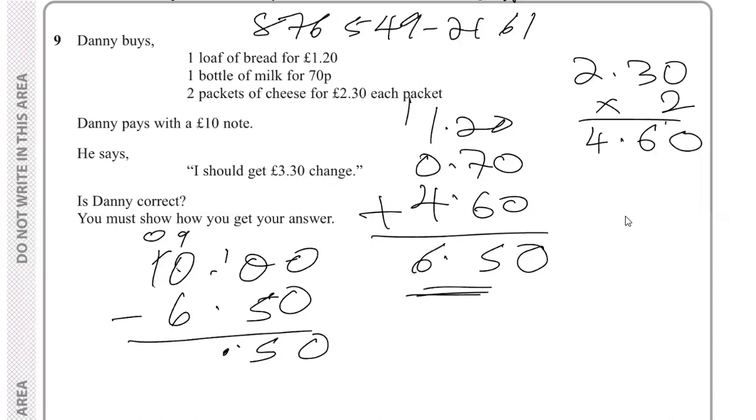Six from nine gives us three. So Danny is actually incorrect. He would have gotten about three pounds and fifty cents.